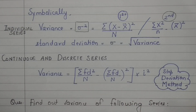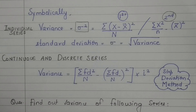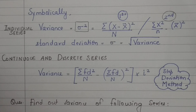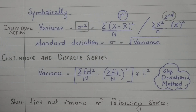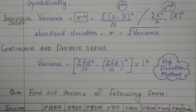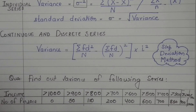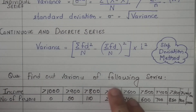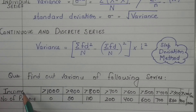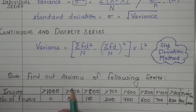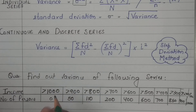Now let's take an example of a continuous series to find out the variance. If you have learned standard deviation for individual series, the variance is simply its square — so let's skip that. The example is: find the variance of the following series where income and number of persons are given.